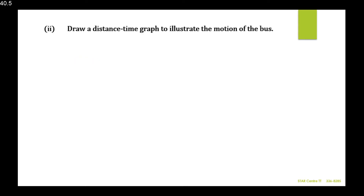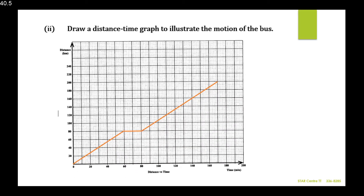Part 2: draw a distance-time graph to illustrate the motion of the bus. The bus starts from rest at station A, which is at the origin. It travels 80 kilometers in 60 minutes, so the time axis is in minutes. At 60 minutes, the distance reaches 80 kilometers.